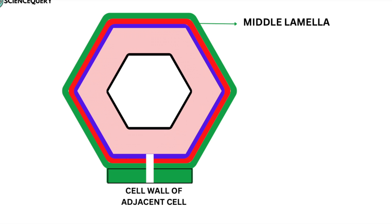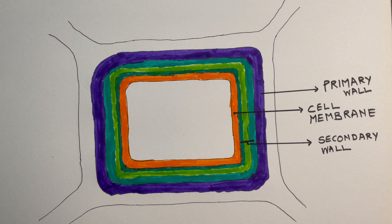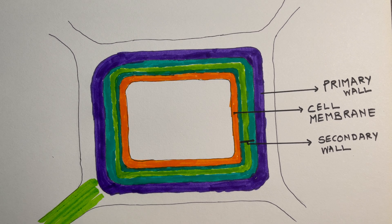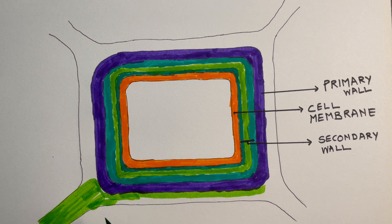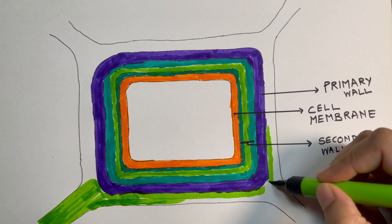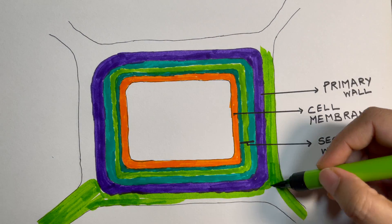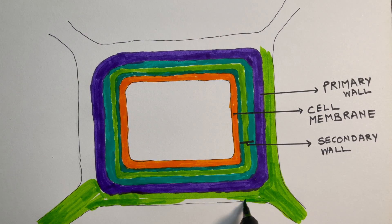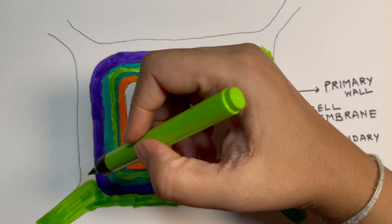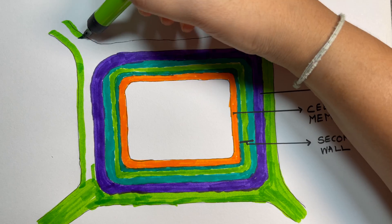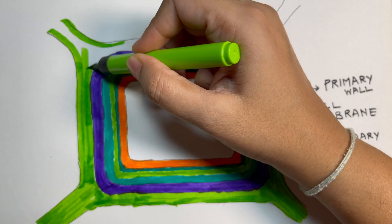Now the outer layer that is the middle lamella. It is the outermost layer of the cell wall, mainly made up of calcium and magnesium pectate. It is the non-living layer that increases its volume by accumulation of material. It exists as a cementing layer between two primary cell walls of the adjacent cells.